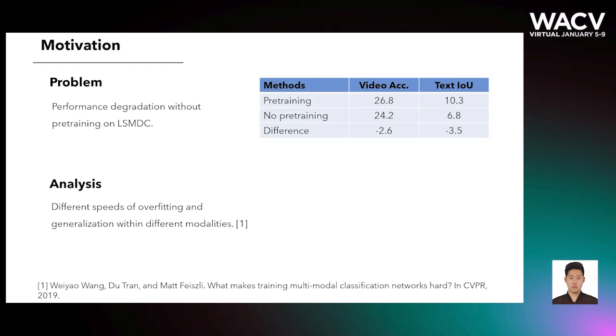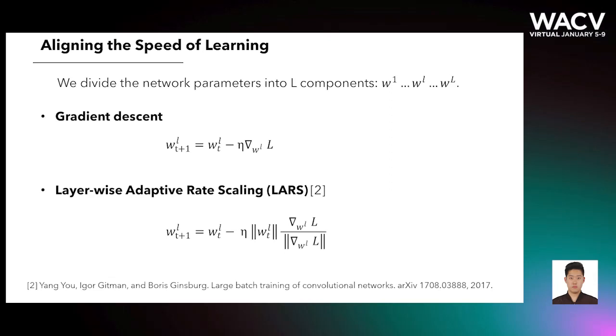Upon close inspection, we realized that the network components in NewMatch dealing with different modalities overfit or generalized at different speeds. We proposed two techniques to cope with this issue. The first is to align the magnitude of gradient updates so that different subnetworks learn at similar rates. The second is to align the internal feature distributions of different modalities.